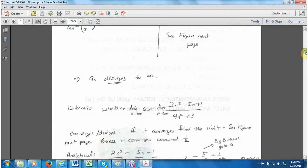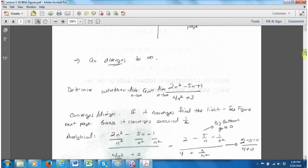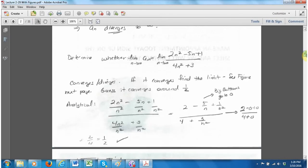The second one, determine whether the limit of this sequence is convergent or not. We've done this many times. We can do this graphically very quickly. Let me do the analytical first, then we'll look at the figure. Everybody knows how to do this - you divide by the highest power, which is n squared. We divide through by n squared, then we get big bottoms go to zero, and we get 2/4, which is 1/2.